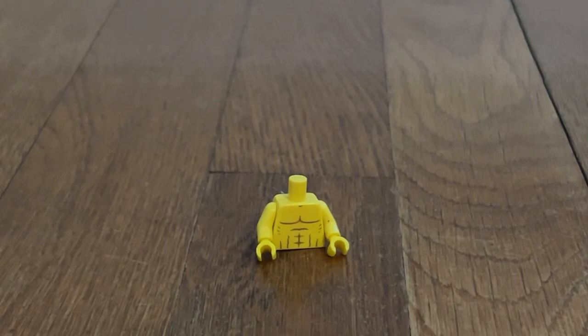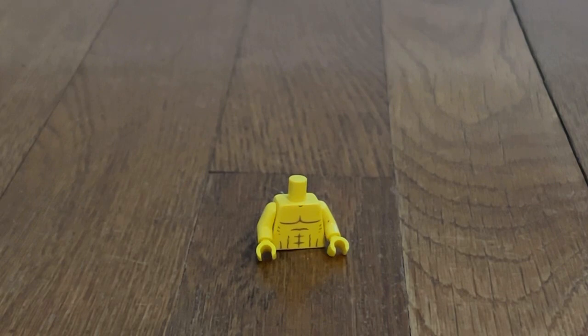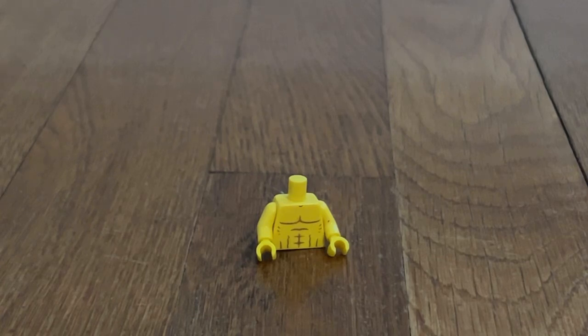So first things first, you're going to take any torso with printing on it. For example, I use the CMF series 12 lifeguard's torso. It has so much printing on the front and I've been dying to show you how to remove all the printing off.